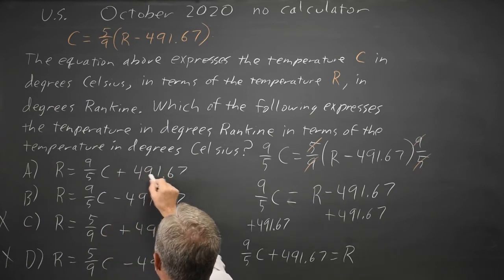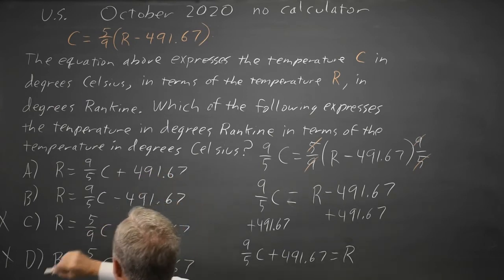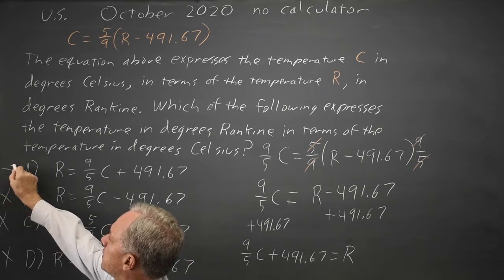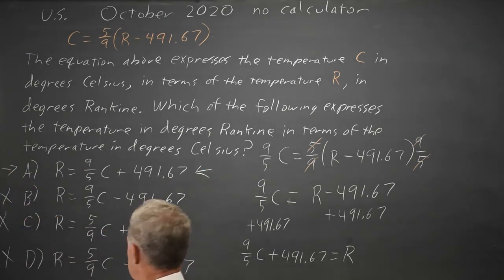A is plus 491.67. B is minus. The minus is wrong. So, the correct answer is choice A.